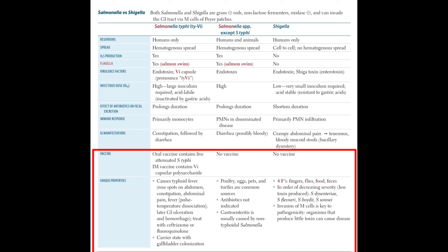The unique property of Salmonella typhi is that it causes typhoid fever. There are rose spots on the abdomen, constipation, and abdominal pain. Later it can progress to GI ulceration and hemorrhage. Typhoid can be treated with Septra, azithromycin, or fluoroquinolones. Carrier states are treated with cholecystectomy, because the carrier state involves gallbladder colonization — so the gallbladder must be removed.